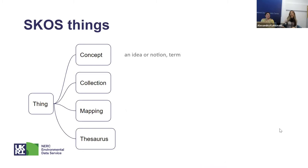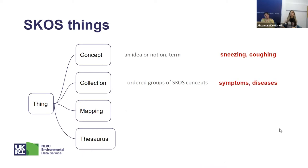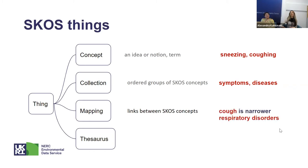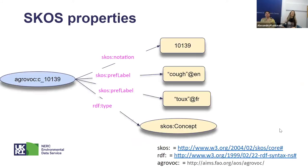Some things that you can define in SKOS are concepts, collections, mappings, and thesauri. A concept is an idea, a notion, or a term, like sneezing or coughing. A collection is an ordered group of SKOS concepts — for example, the collection of symptoms can include concepts like sneezing and coughing. A mapping is a link between two SKOS concepts; for example, cough and respiratory disorders can be associated using a property called 'narrower' — you can say that cough is narrower than respiratory disorders. A thesaurus is an aggregation of one or more SKOS concepts.